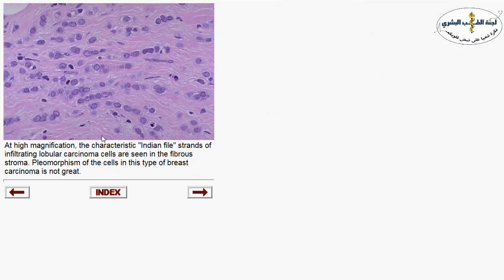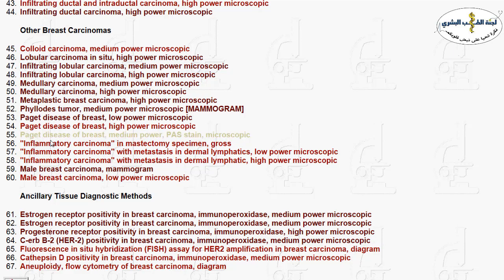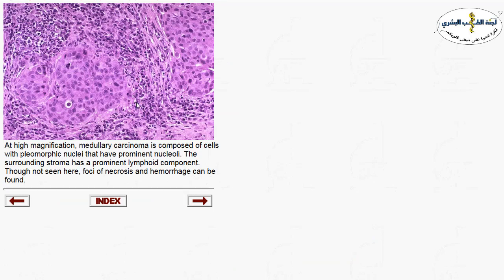Another type of breast carcinoma — other than invasive ductal carcinoma — is lobular carcinoma. Lobular carcinoma characteristically presents with multiple foci within the same breast and can affect the other breast, carrying a bilateral risk. The cells of lobular carcinoma are monotonous, similar in shape and type, and invade in an Indian file pattern — forming single strands.